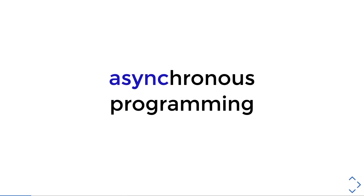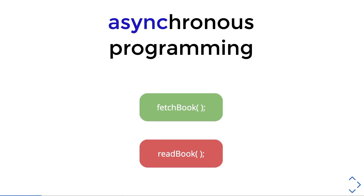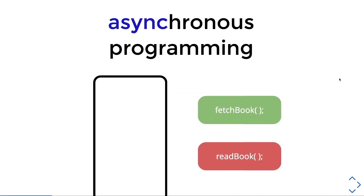Let me give you an example of how you might implement it in your app. You have two functions: the fetch book function and the read book function. The fetch book function fetches a book from the database, and with the book you've fetched, it will be able to read the book using the read book function and display it in the app. Therefore, we want the fetch book function to run first, and then the read book function to run after.